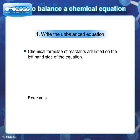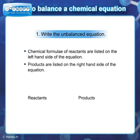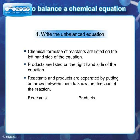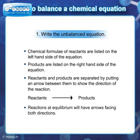Chemical formulae of reactants are listed on the left hand side of the equation. Products are listed on the right hand side of the equation. Reactants and products are separated by putting an arrow between them to show the direction of the reaction. Reactions at equilibrium will have arrows facing both directions.